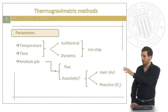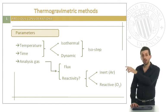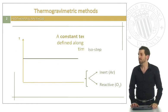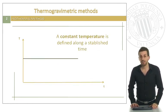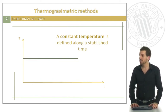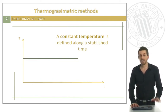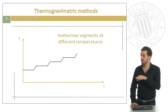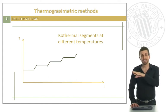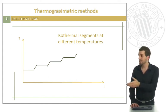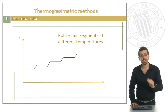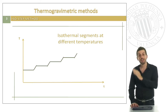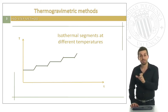Let's see then, according to the different combinations of temperature and time, the different methods that we can apply. When we define an isothermal method, we define a constant temperature along an established time. If we make some different steps, this is the isostep method, in which isothermal segments at different temperatures are defined. We can also define dynamic steps between these isothermal segments.